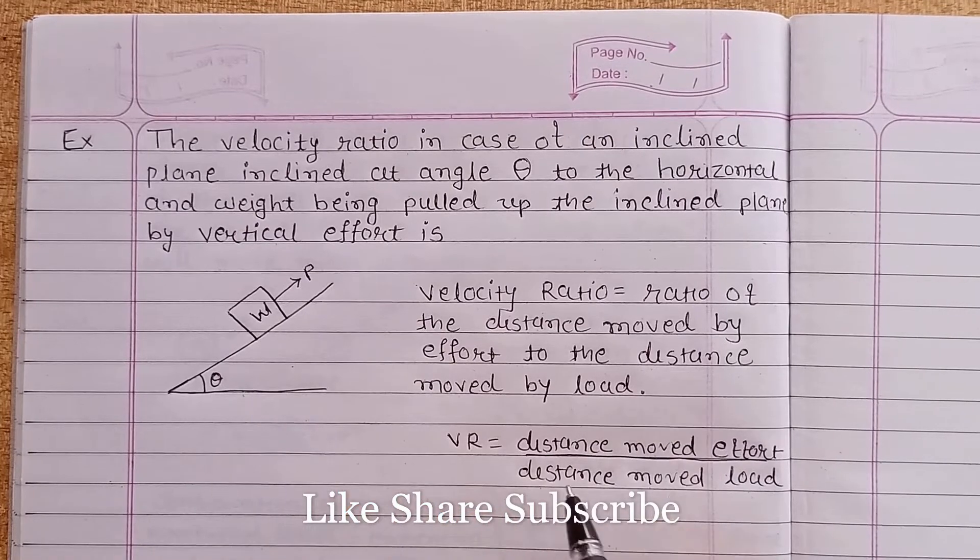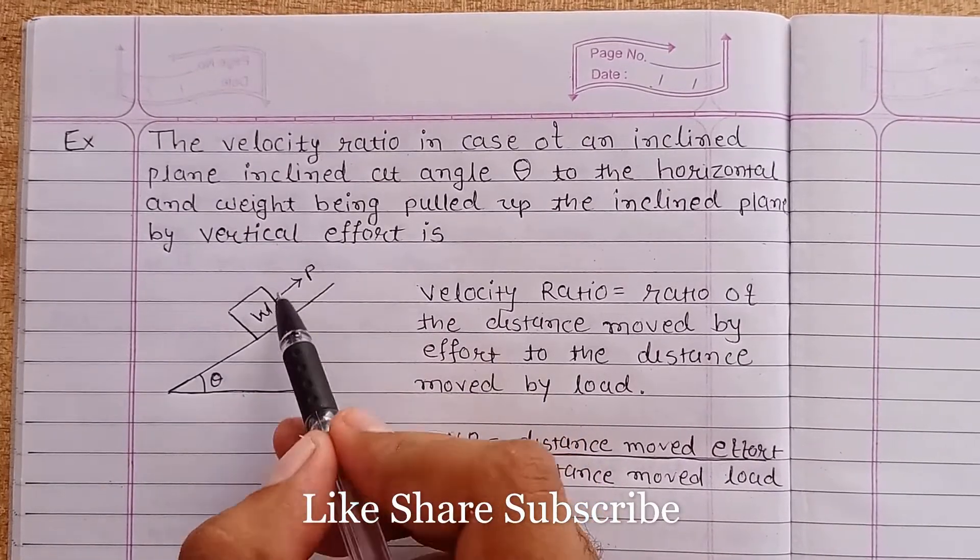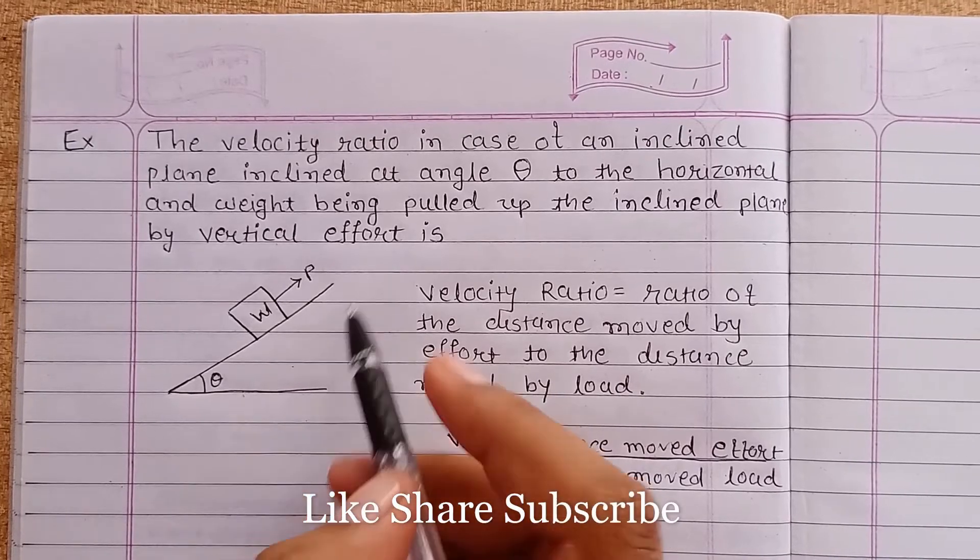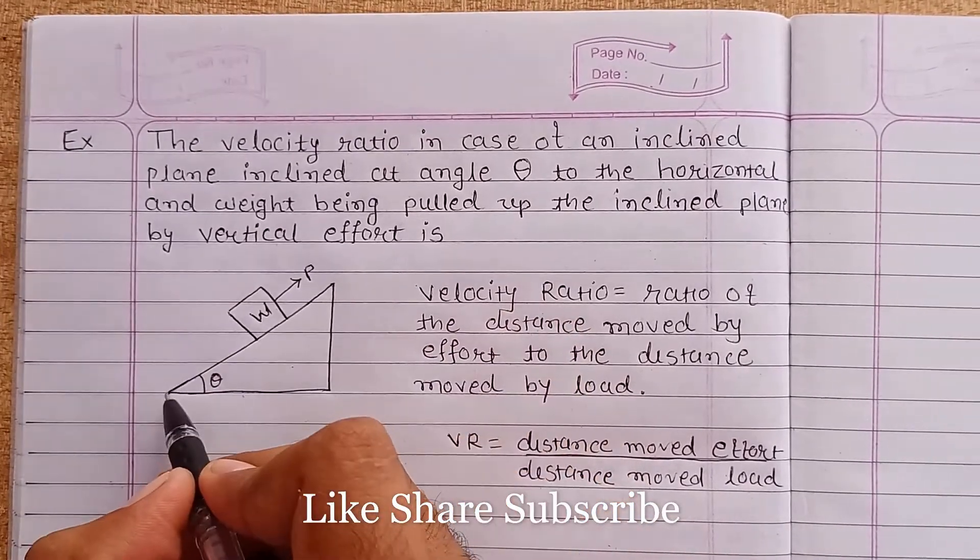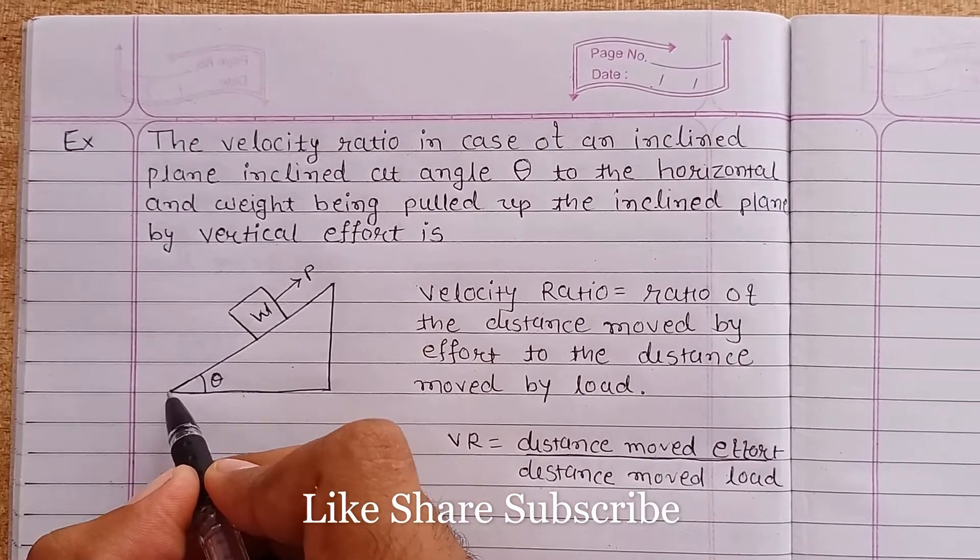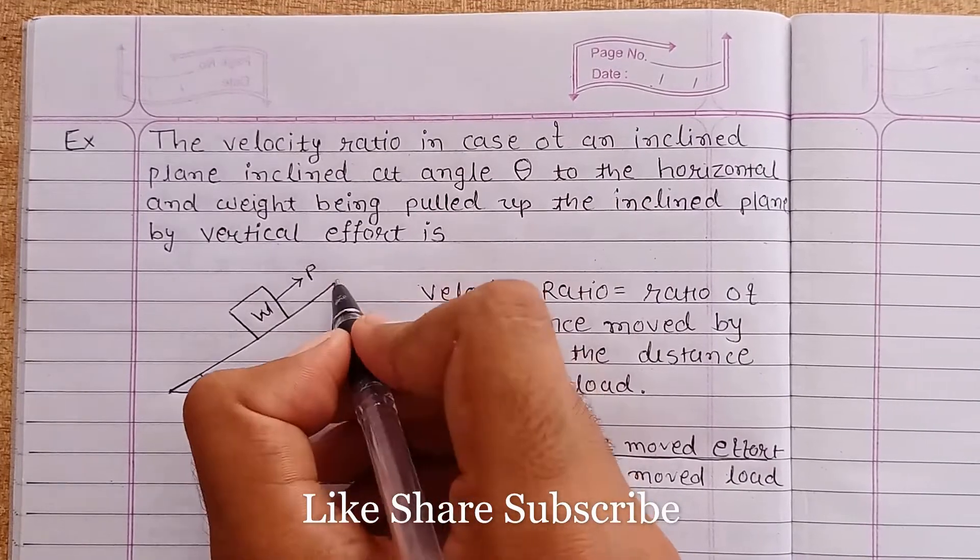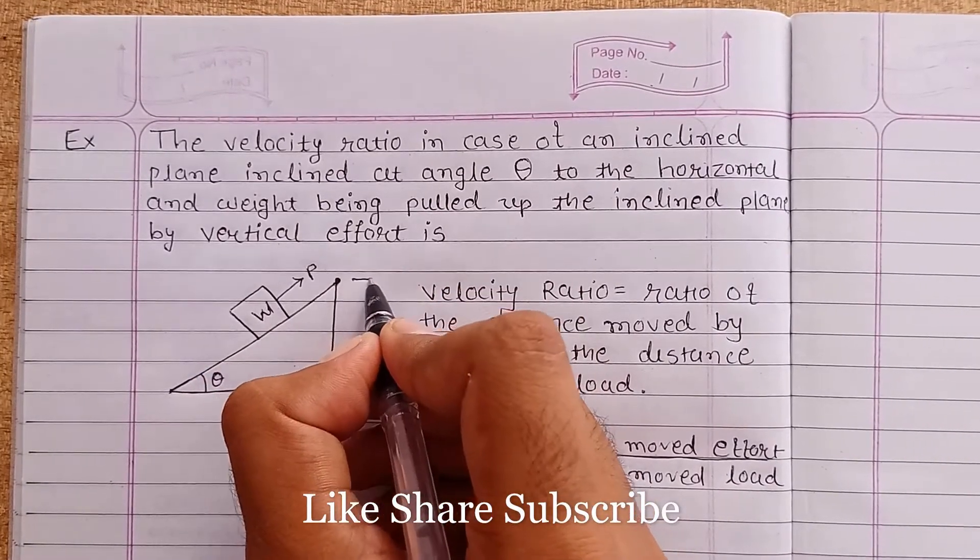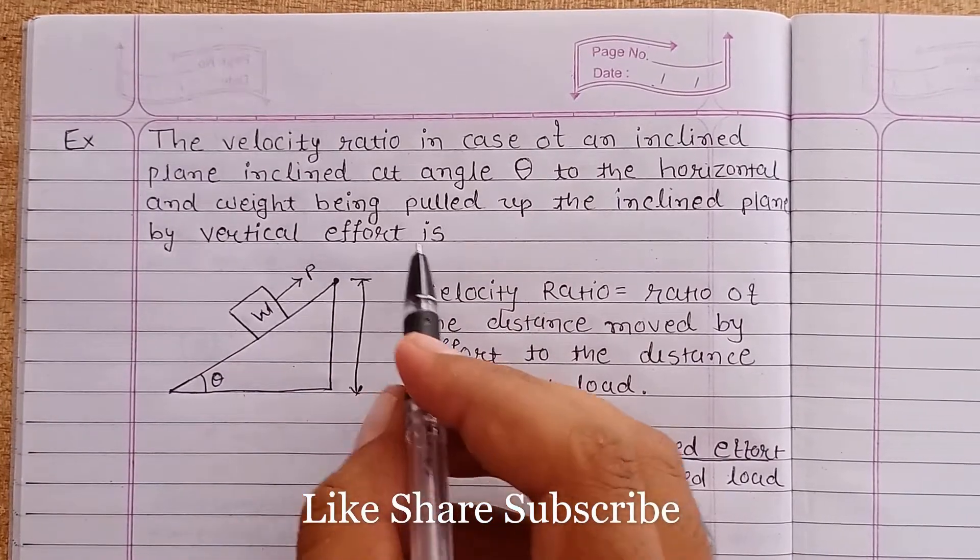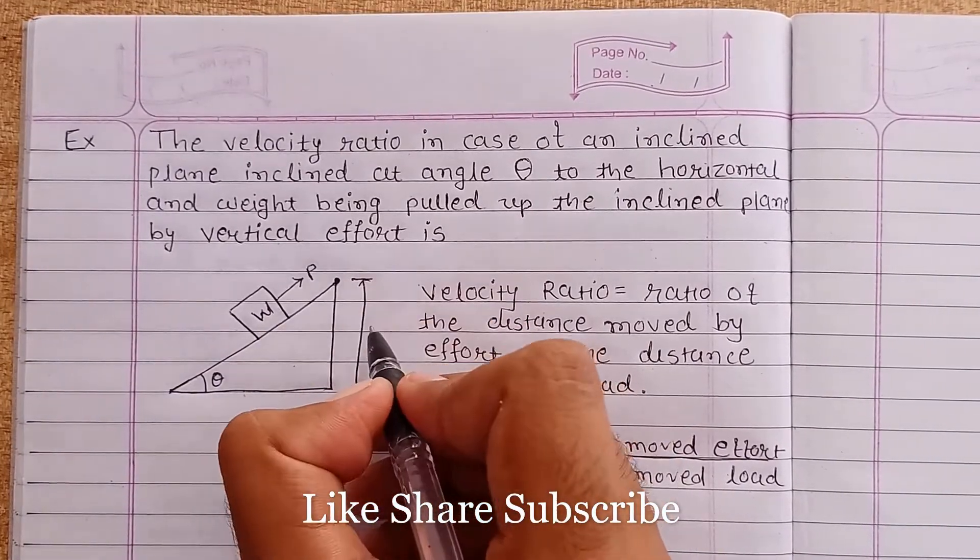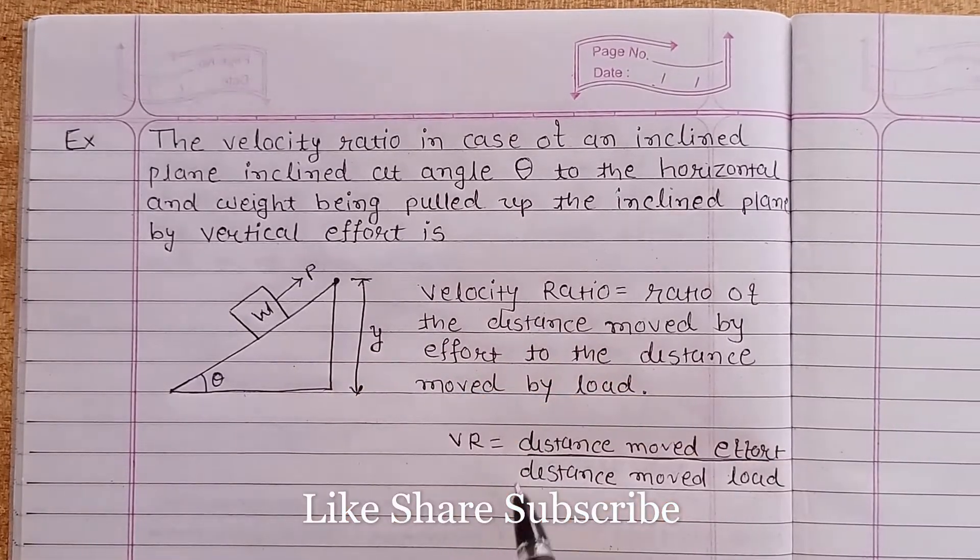From this, let's say the distance moved by effort. Because of this effort P, our load achieves this much vertical height. Initially our load is at this point, after applying the effort P our load reaches this height. The total vertical distance covered because of the effort is, let's say, Y. And distance moved by the load—so load has covered this much distance during the movement—let's say that is X.